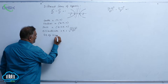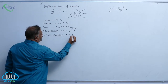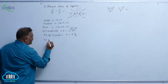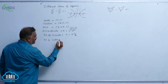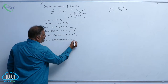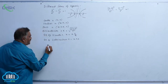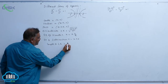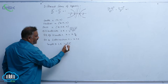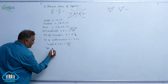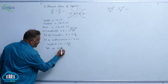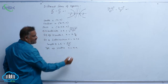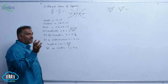The equation of the directrix is x = ±a/e. The equation of the latus rectum is given by x = ±ae. The length of the latus rectum is given by 2b²/a. Tangents at the vertices are given by x = ±a.